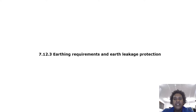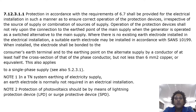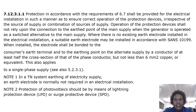Earthing requirements and earth leakage protection: neutral bar earthing in accordance with the requirements of 6.7 shall be provided for the electrical installation in such a manner as to ensure correct operation of the protection devices irrespective of the source of supply. Operation of the protection devices shall not rely upon the connection to the earth point of the main supply where the generator is operated as a switched alternative. Where there is no existing earth electrode, a suitable earth electrode may be installed in accordance with SANS 10199.